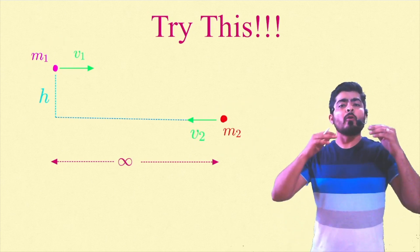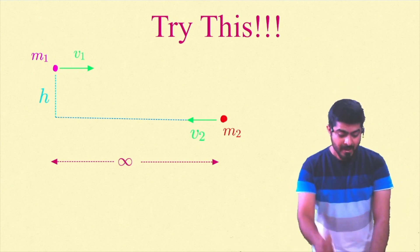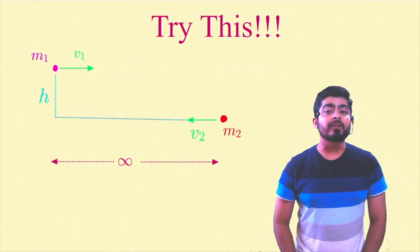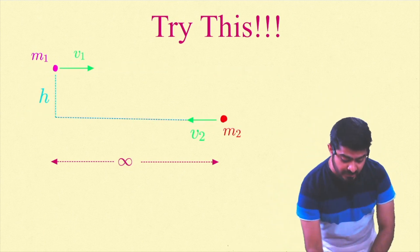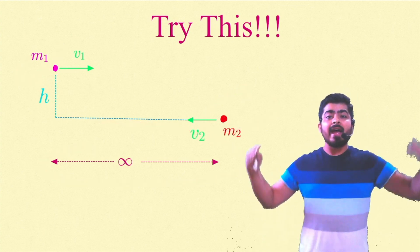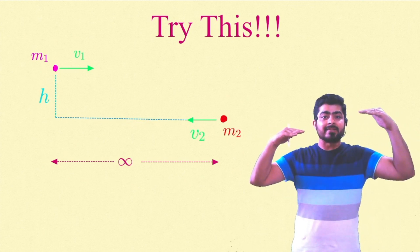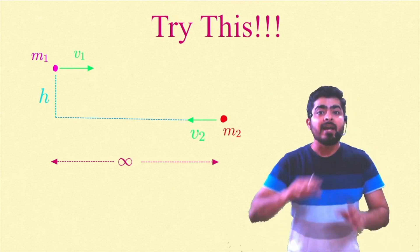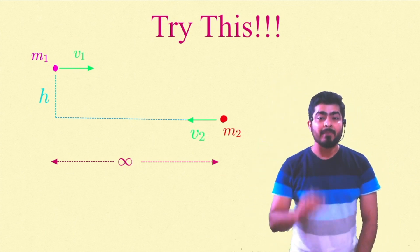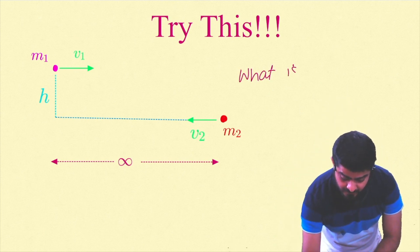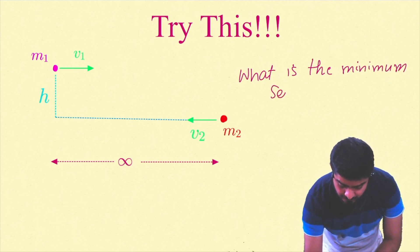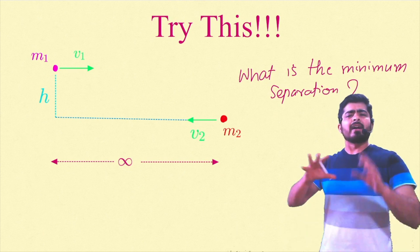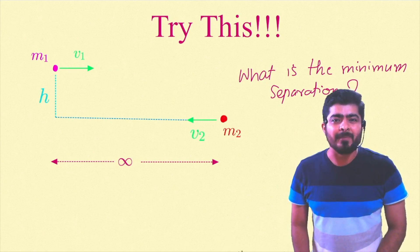Here's another interesting question for you to try yourself. Two particles m1 and m2 move under only their mutual gravitational attraction. m1 has velocity v1 and m2 has velocity v2 in given directions. The perpendicular distance between their velocity vectors is h, and initially they are at very large separation. As they move they will come close, follow a curved path, and then go away again. What is the minimum separation between m1 and m2? Apply all the concepts from these two videos to find the answer.